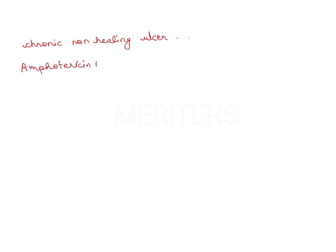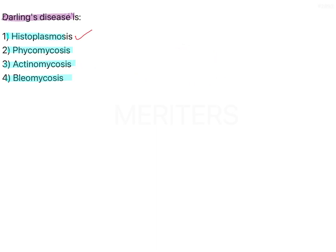Mostly it is treated by Amphotericin B, but you will need supportive treatment with Itraconazole or Ketoconazole for 6 to 12 months. This is the regimen for histoplasmosis. So the correct answer here is option A.